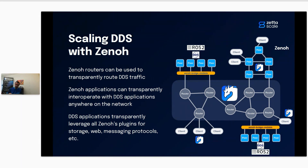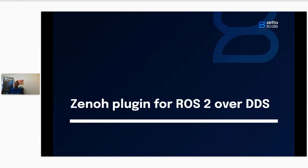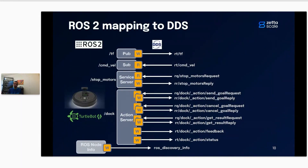The key point is to scope all your DDS within subsystems and interconnect those subsystems with Zeno — with Zeno routers and sometimes with other Zeno applications or other technology applications that are also bridged by Zeno. You can build very complex networks of DDS subsystems interconnected with a Zeno infrastructure. Let's dive into this new plugin for ROS2 over DDS.